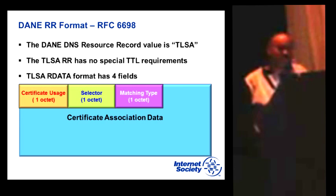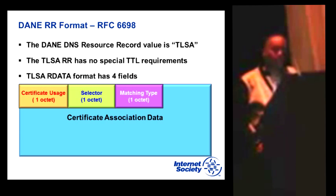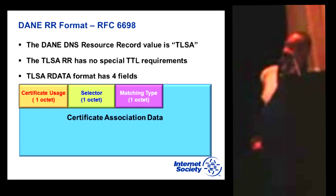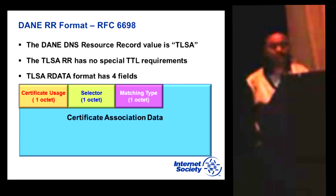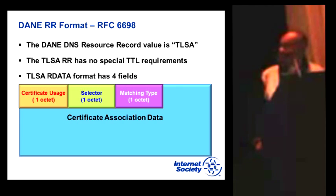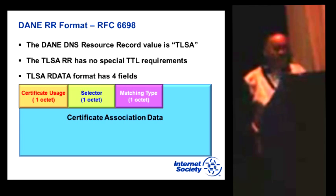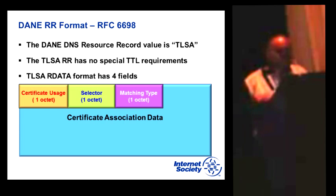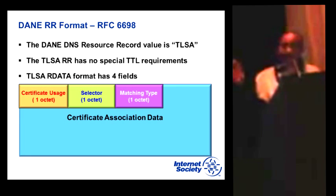DANE is defined by RFC 6698. The resource record value is known as TLSA. There's no special TTL requirement compared to other resource records. It has four particular fields: the certificate usage, the selector, the matching type, and the certificate association data. Each one plays a key role.